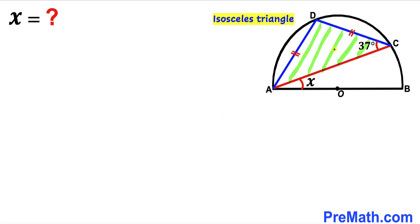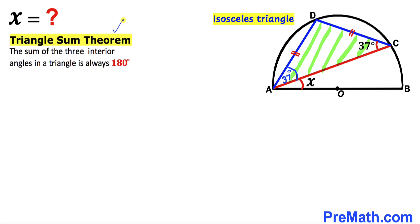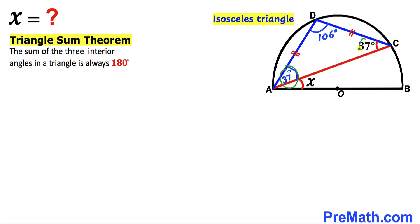Let's get started. Since triangle ACD is isosceles with AD equal to CD, the base angles are congruent. So if angle ACD is 37 degrees, then angle CAD is 37 degrees as well. Recalling the triangle sum theorem — the sum of three interior angles must equal 180 degrees — angle ADC has got to be 106 degrees, and indeed all three angles add up to 180 degrees.